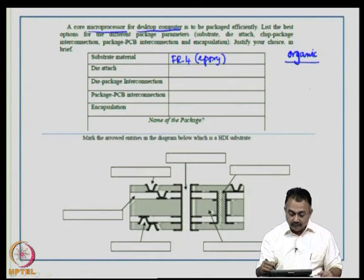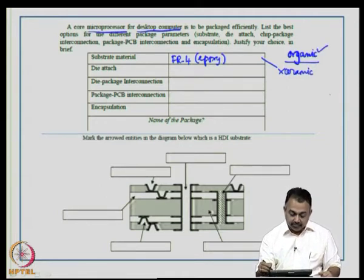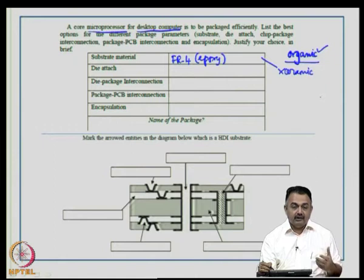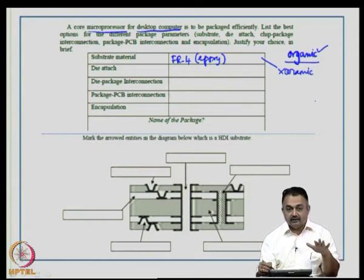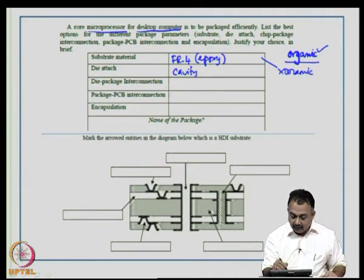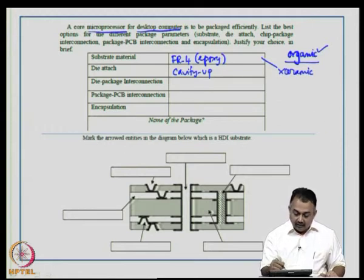For die attach, a cavity-up approach is preferable because it is less expensive and easier to work with — you can place it on the surface of the substrate. Cavity-down requires substrate modifications, so cavity-up is the practical choice.